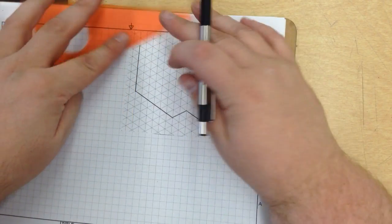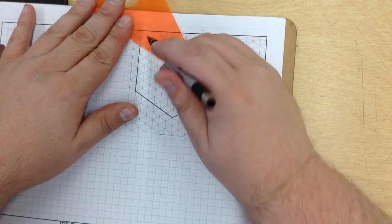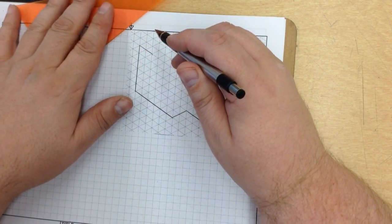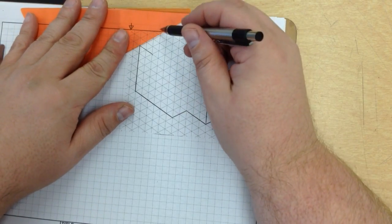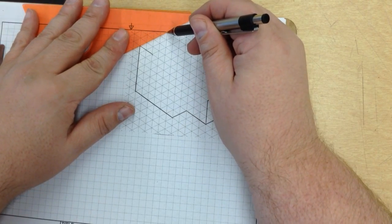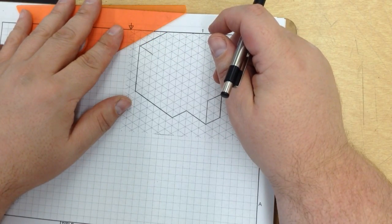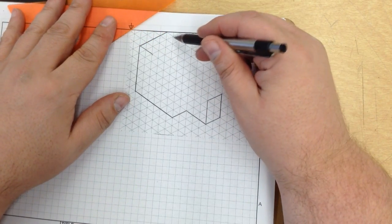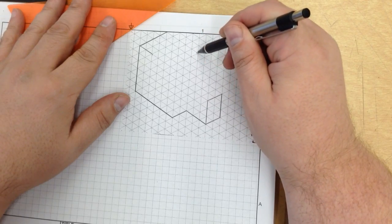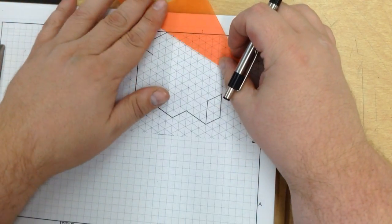Just like so. Now, 2 over, 2 over, 4 back, and 1, 2, 3, 4, 5, 6, 7. 1, 2, 3, 4, 5, 6, 7 right there.